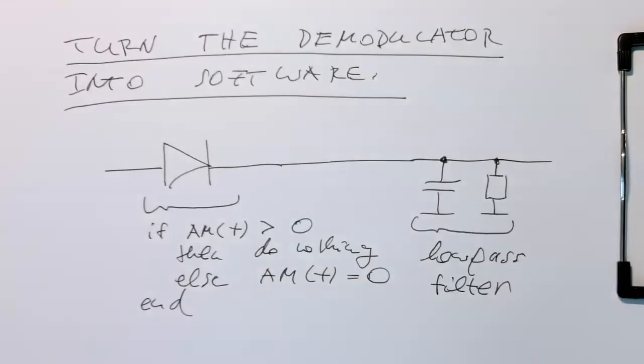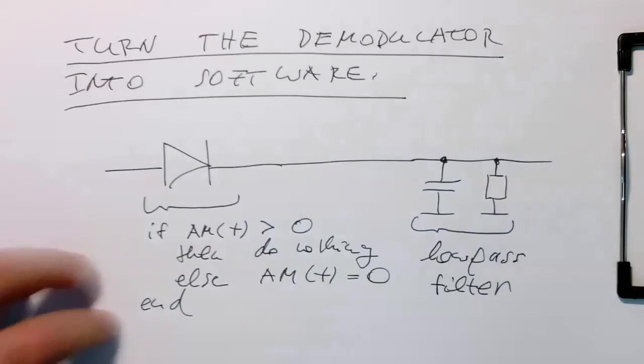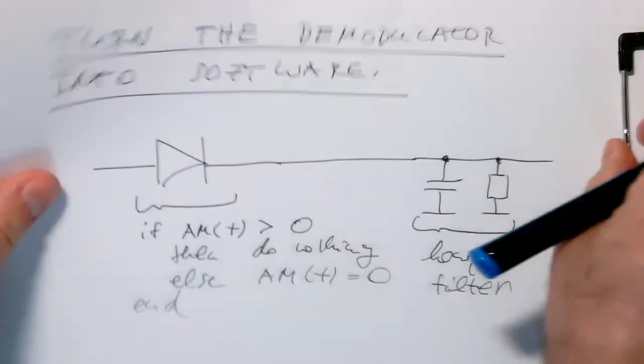So now we need to translate this low-pass filter, this analog one, into a digital one. How do we create a digital low-pass filter?